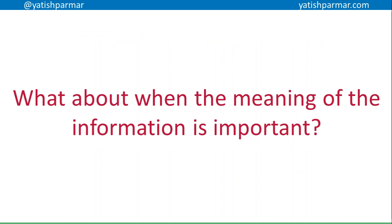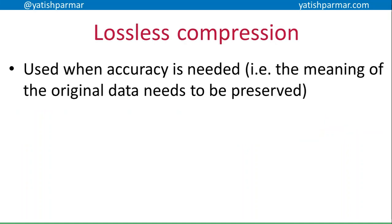What about when the meaning of the data or information is actually important? For example, when you have an image and compress it, you're removing non-essential detail — you can get the gist of what the image is about, like when you watch videos on YouTube. It doesn't need to be crystal clear; you can see and hear it enough to get the meaning. When you need lossless compression, it's basically when the meaning of the original data has to be preserved because accuracy is important.